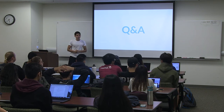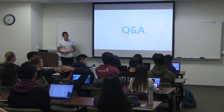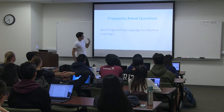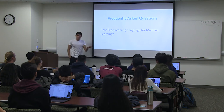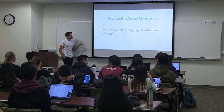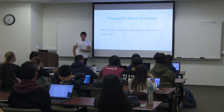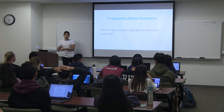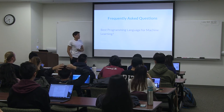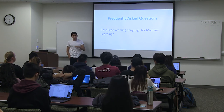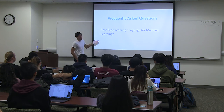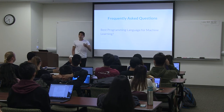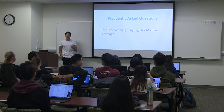Another question: what programming language is used? The best programming language for machine learning is Python. It's easy to use and easy to prototype machine learning models. Once you're ready to deploy your program or put it into an app, you might not use Python because it's not the most efficient, but most of your prototyping and machine learning work will be done in Python. There are other languages like R, which is more scientific, and MATLAB, but Python is the main language used for machine learning.